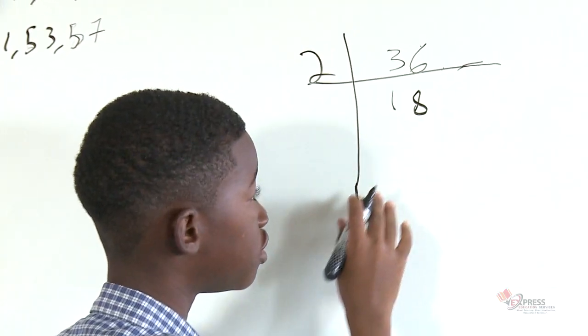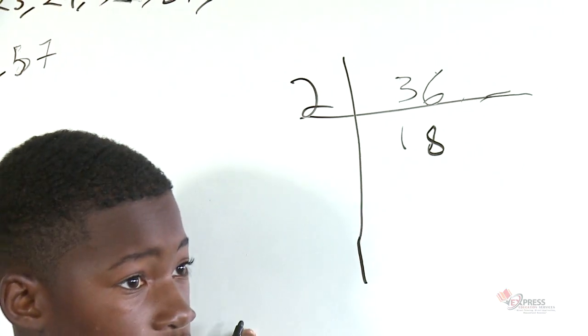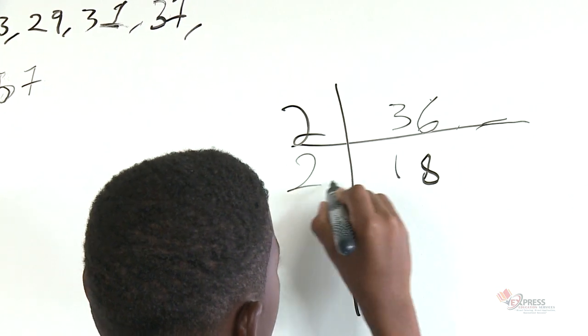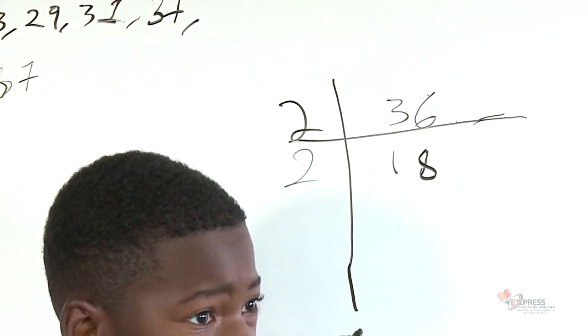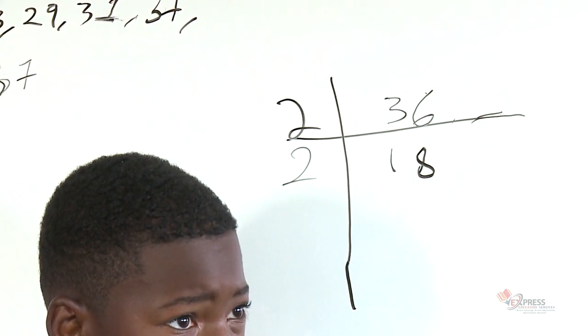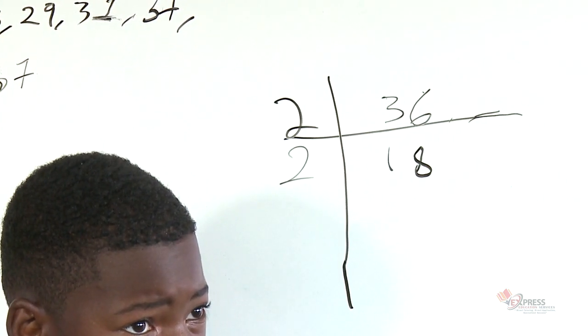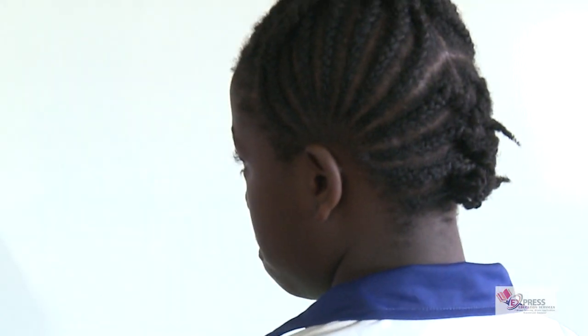I'm going to use 18. Two into 18 — nine times. Alright.